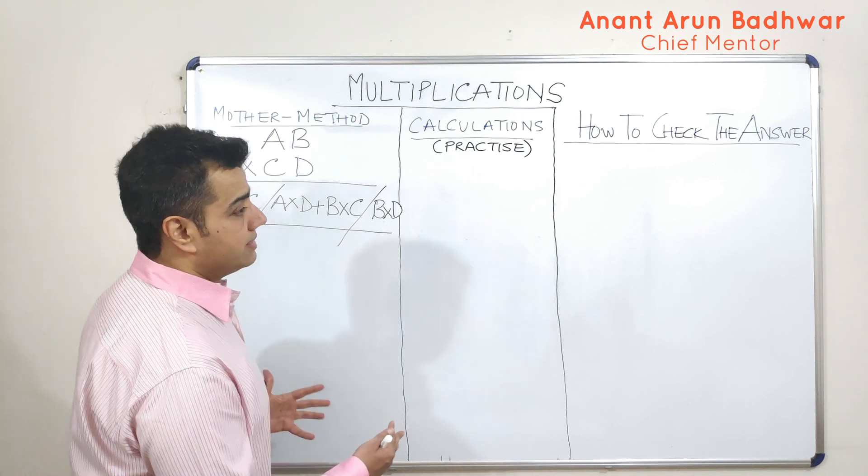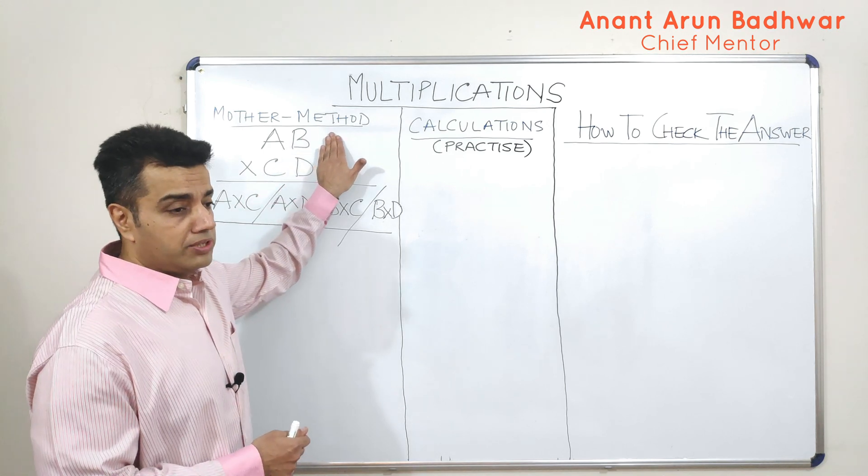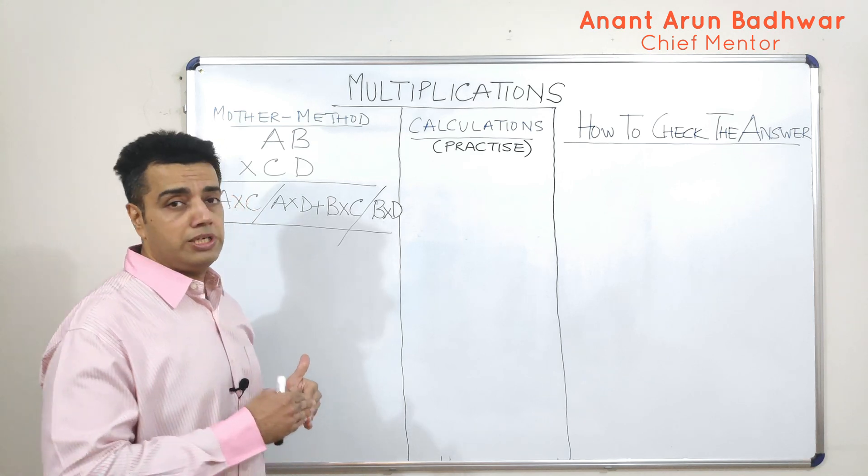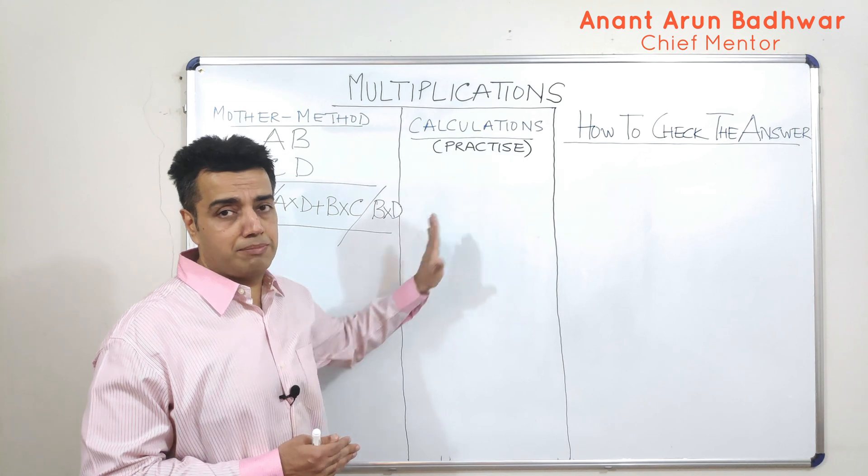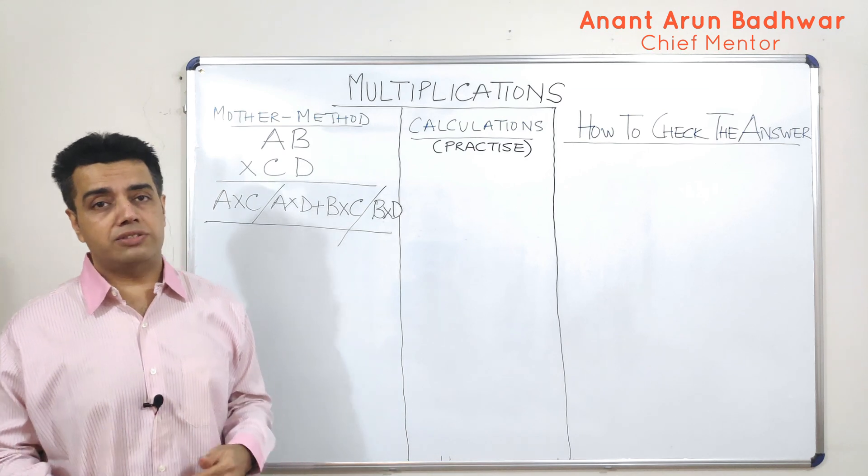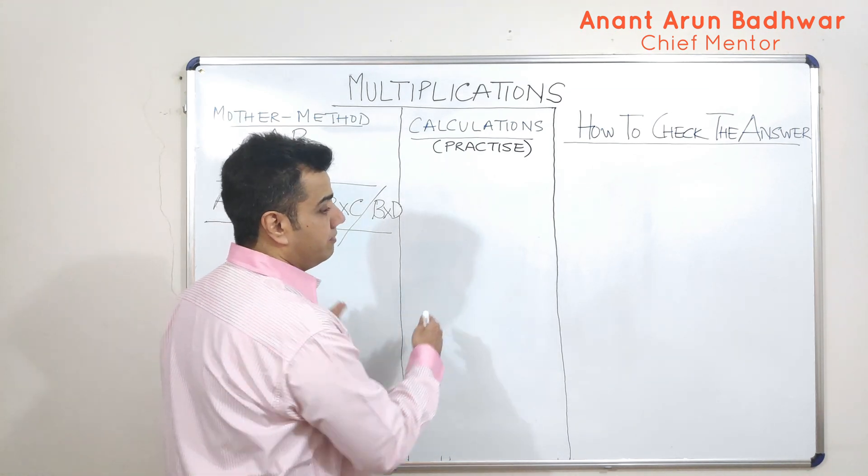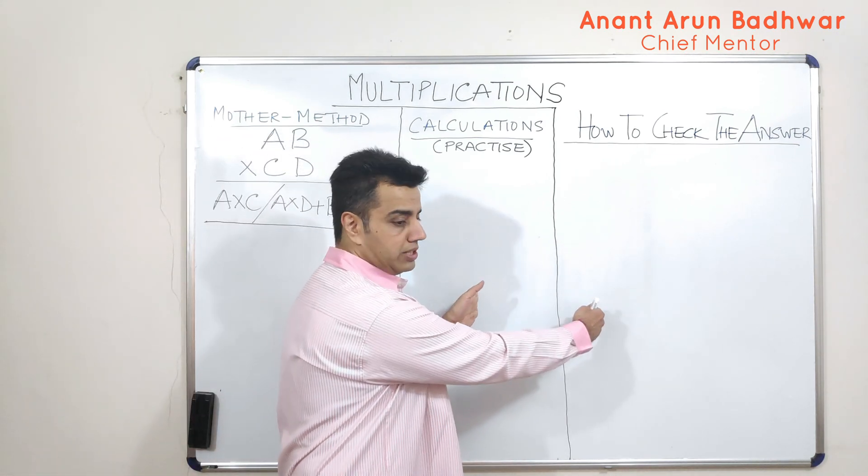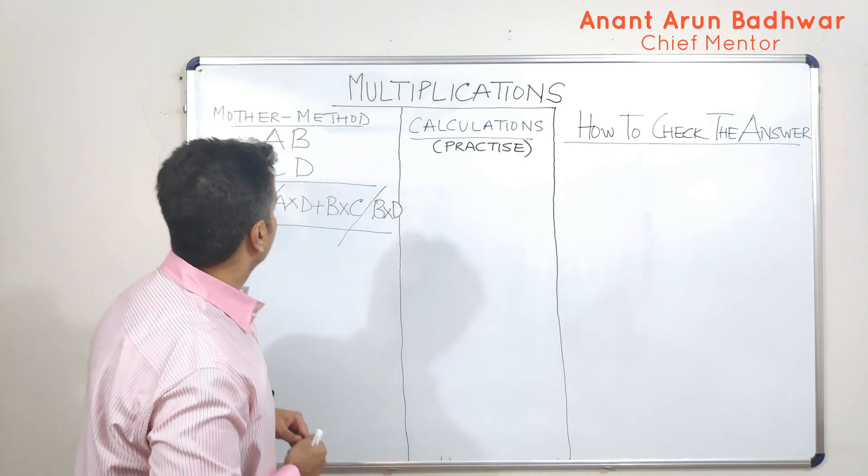Now, we'll broadly divide this session into three parts. We'll first talk about the mother method, the basic method of doing two-digit multiplications. Then we'll be practicing with some examples. And finally, we'll learn something new today, which is how to check the answer, which is equally important. In the first two sections, we will be categorically talking about accuracy. But in the latter two sessions, we'll be talking about speed and accuracy both.